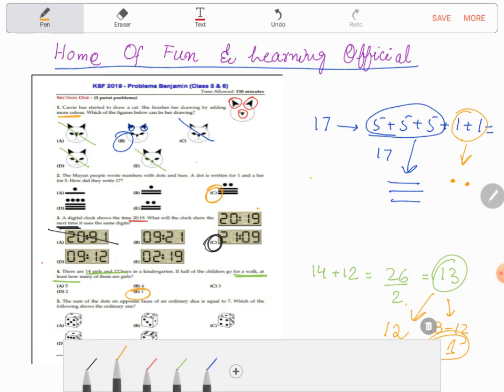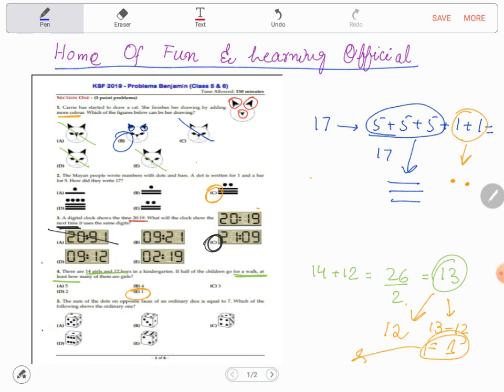Okay, now move on to the next question. Question number five: the sum of the dots on the opposite faces of an ordinary dice is equal to seven. Which of the following shows the ordinary one? They're saying that opposite faces, like this face and the back opposite face, should have numbers that add to seven in order for it to become an ordinary die. Let's consider A.